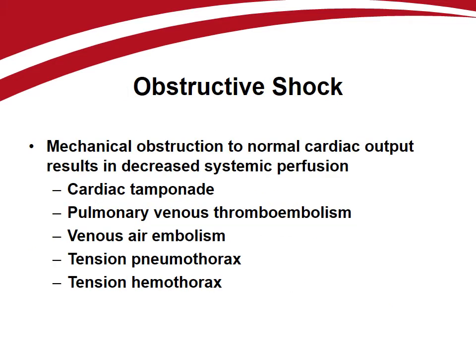Obstructive forms of shock are those in which the underlying pathology is a mechanical obstruction to normal cardiac output with a resulting decrease in systemic perfusion. Cardiac tamponade is an example of obstructive shock. Clinical signs of tamponade include jugular venous distension and pulsus paradoxus, an exaggerated fluctuation in arterial pressure caused by changes in intrathoracic pressure during respiration.